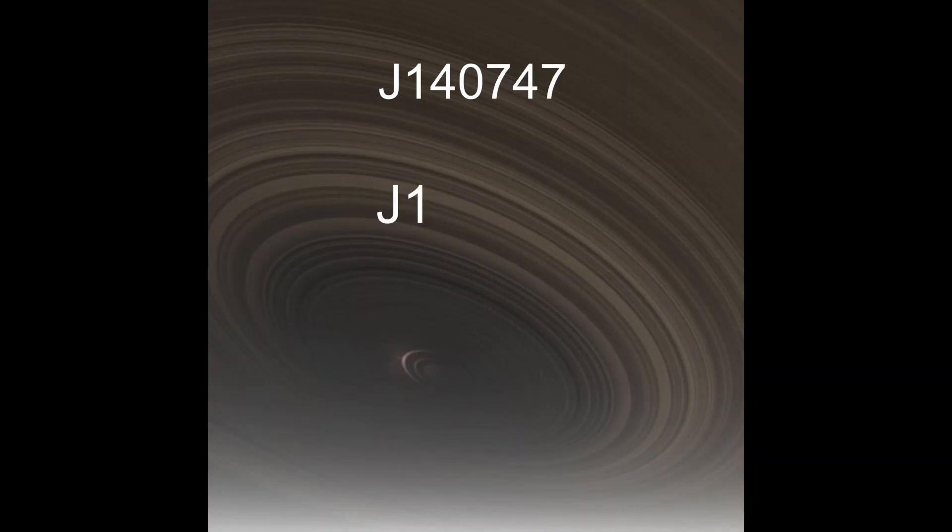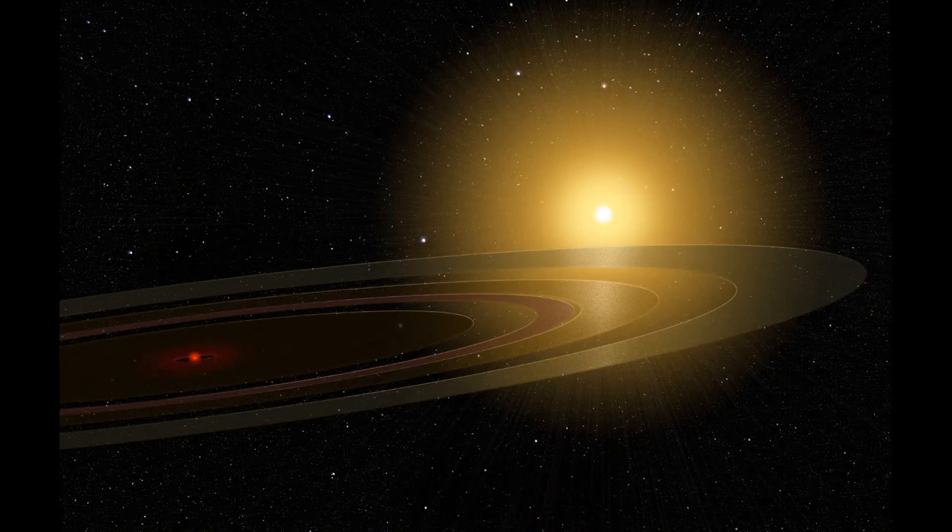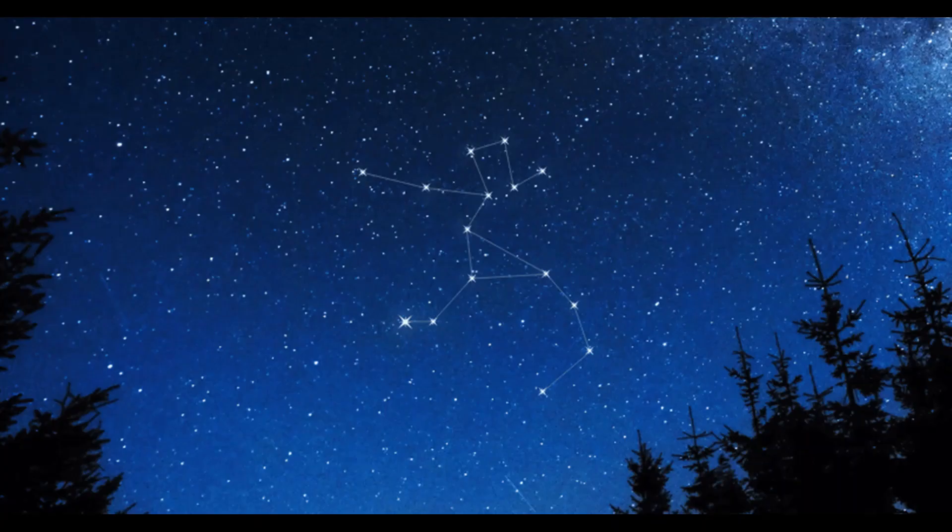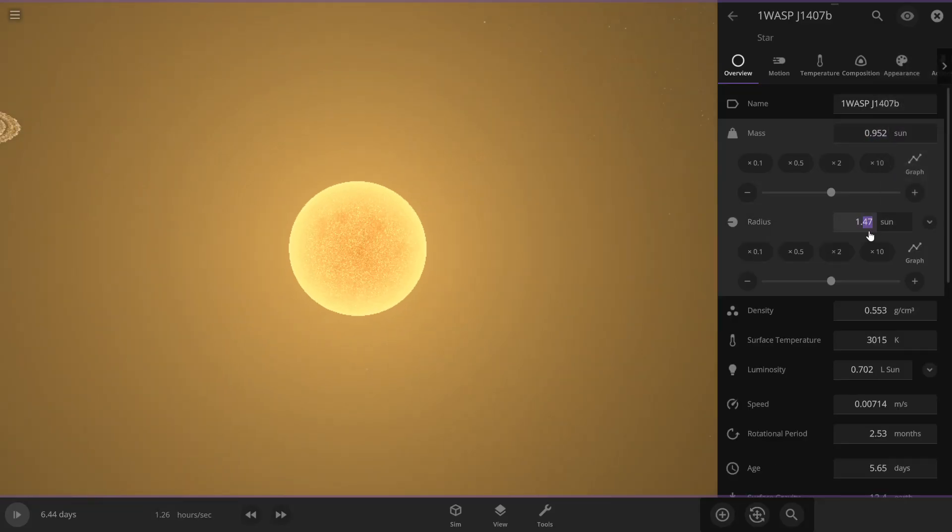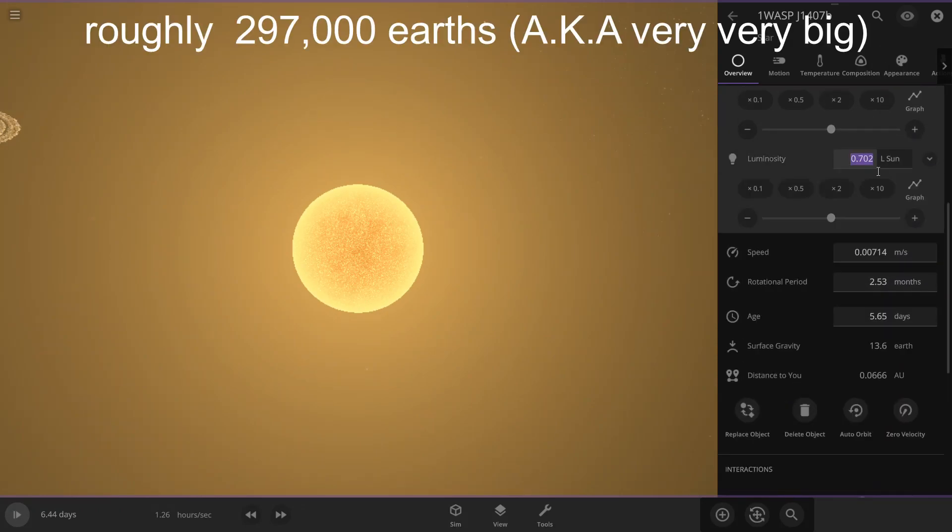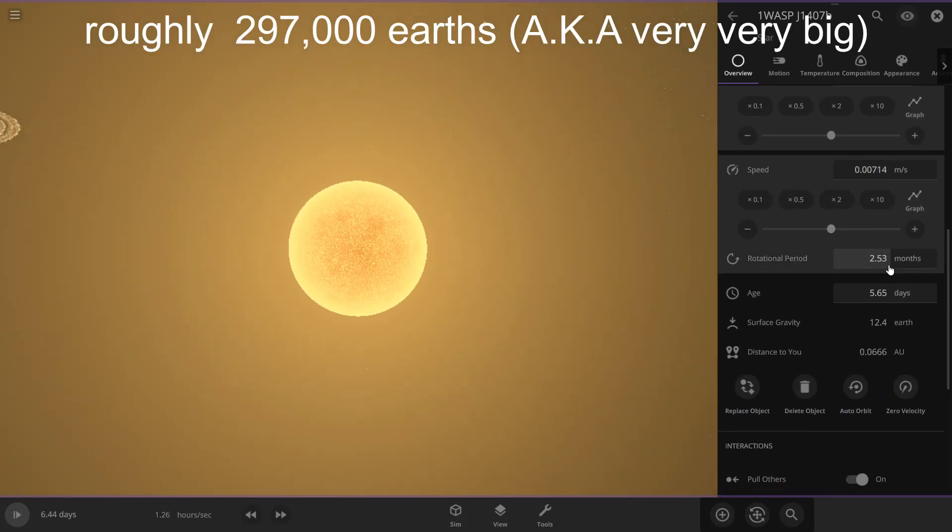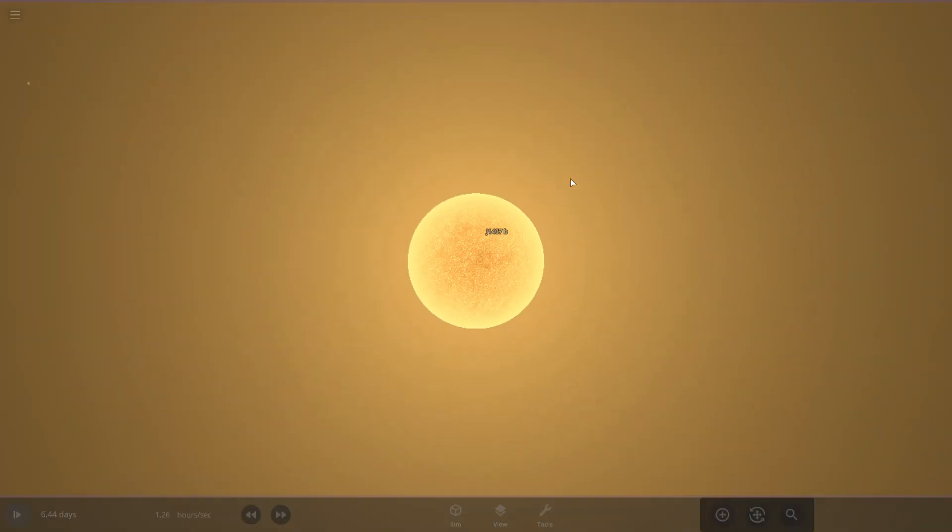J1407b and Mamajek's object orbit a star similar to the sun in the constellation Centaurus at a distance of about 434 light years from Earth. This so-called super Saturn is a relatively young star estimated to be 16 million years old, with a mass about 90 percent that of the sun.